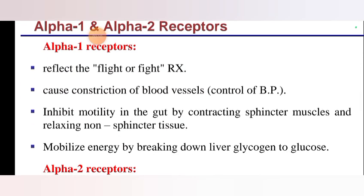Alpha 1 and alpha 2 receptors. Alpha 1 receptors reflect the fight-or-flight reaction: post-constriction of blood vessels, control of blood pressure, inhibit motility in the gut by contracting sphincter muscles and relaxing non-sphincter tissue, and mobilize energy by breaking down liver glycogen to glucose.